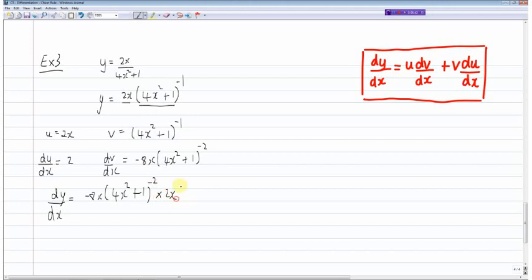And then plus du/dx times by v which is equal to 2(4x² + 1) minus 1. And this can be written as 2(4x² + 1) to the power of minus 1 minus 16x²(4x² + 1) to the power of minus 2.